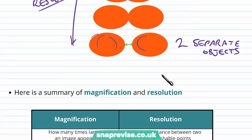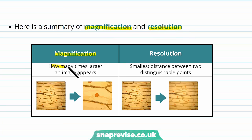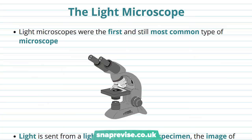To summarize the difference between magnification and resolution, magnification is how many times larger an image appears compared to the real thing. And the resolution is the smallest distance between two distinguishable points. Once they become one point, you've gone past the resolution's limit.